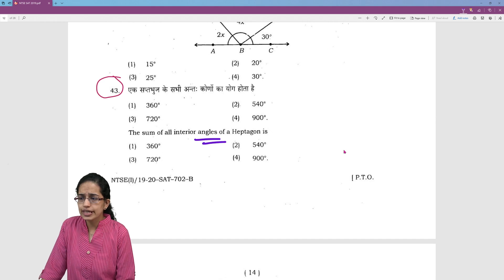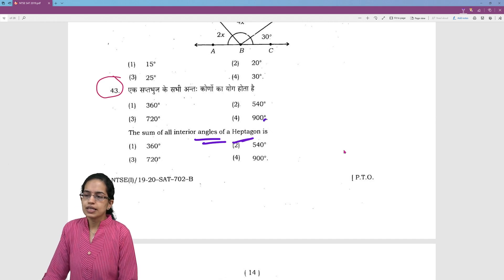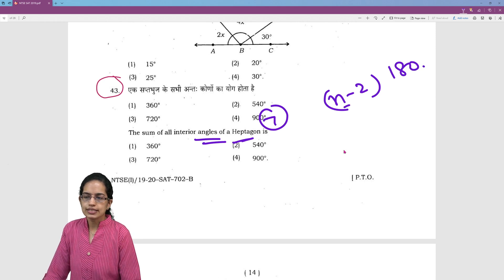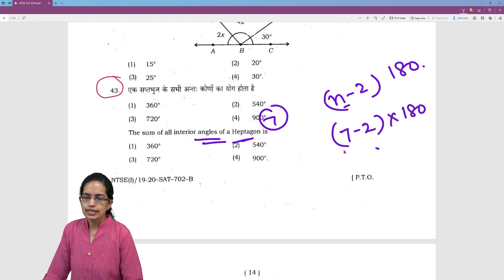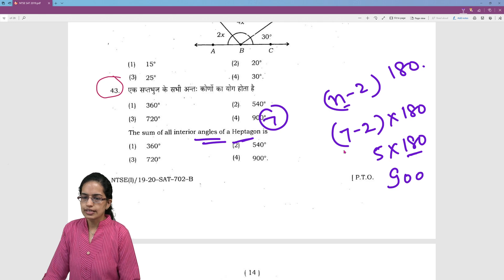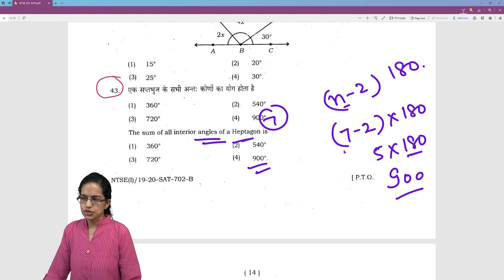Sum of the interior angles - heptagon means 7 sides. So simple formula n minus 2 into 180. n is 7 so 7 minus 2 that is 5 into 180. So 5 into 180. Half of 180 is 90. So 90, 900 becomes the right option here.